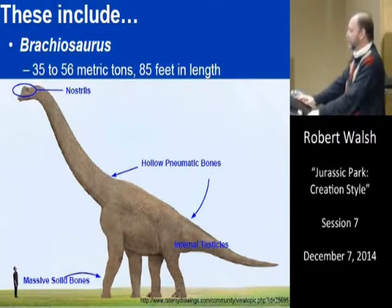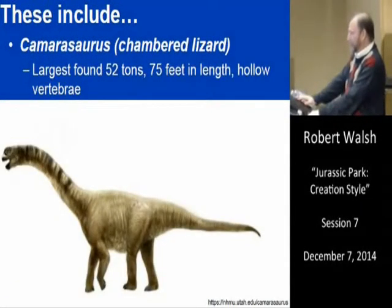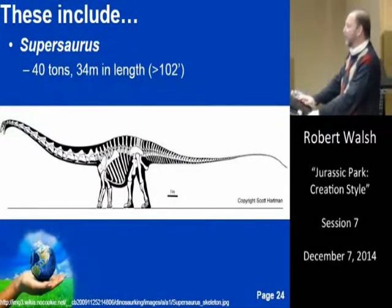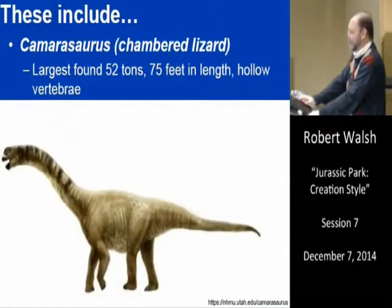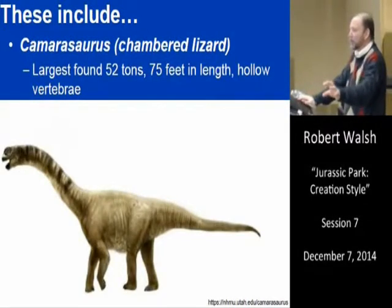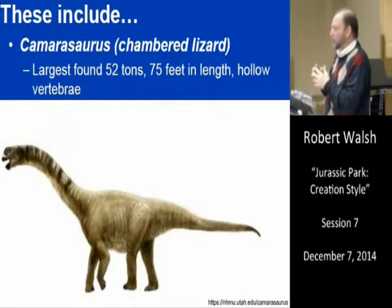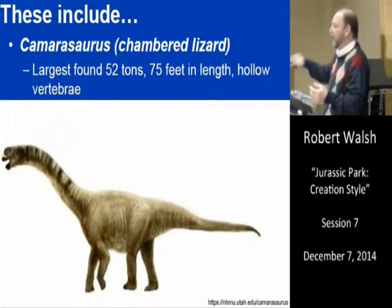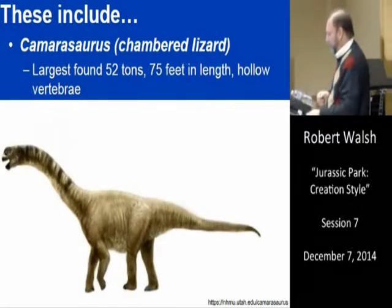The Camasaurus — the chambered lizard — is explicitly named after its pneumatic ability. The largest found is 52 tons, 104,000 pounds, 75 feet in length, with hollow vertebrae. So we find in the fossil record what corresponds to the book of Job. The approach should be: take the biblical text and go look for it in the field. On Leviathan, there's actually data in the biblical text that gives us more information than we find in the fossil record.